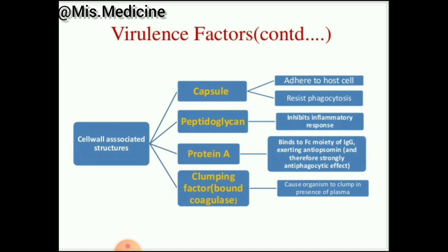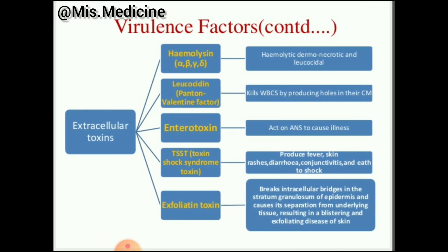Clumping factor causes the organism to clump in the presence of plasma. Extracellular toxins include hemolysin, leukocidin, enterotoxin, toxic shock syndrome toxin, and exfoliating toxin. Hemolysins are divided into alpha, beta, gamma, and delta — with thermonecrotoxic and leukocidal effects. Leukocidin, the Panton-Valentine factor, kills white blood cells by producing holes in the cell membrane.